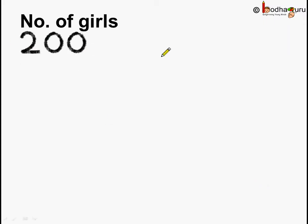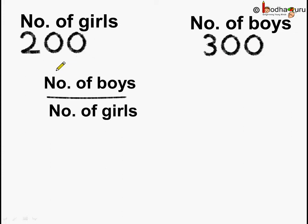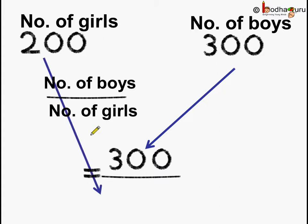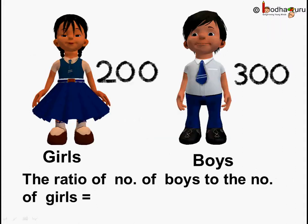The number of girls is equal to 200 and the number of boys is equal to 300. When we are finding the ratio of boys to girls, we divide number of boys by number of girls, which becomes 300 by 200. Simplifying by dividing both by 100, we get 3 by 2. So the ratio of number of boys to the number of girls is 3 is to 2.